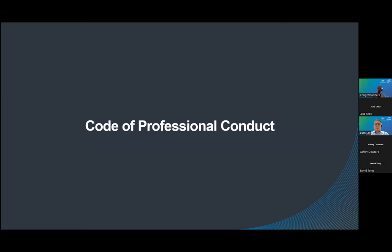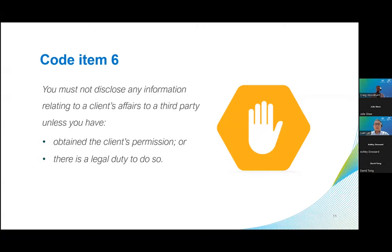It wouldn't be a TPB webinar if we didn't talk about the Code of Professional Conduct. Let's look at the relevant items of the code in the context of cybersecurity. First, Code Item 6 is particularly relevant: you must not disclose any information relating to a client's affairs to a third party unless you've obtained the client's permission or there's a legal duty to do so. Where a breach of confidentiality occurs as a result of a cyber incident, we would consider the IT controls in place to determine what administrative sanctions should be imposed.